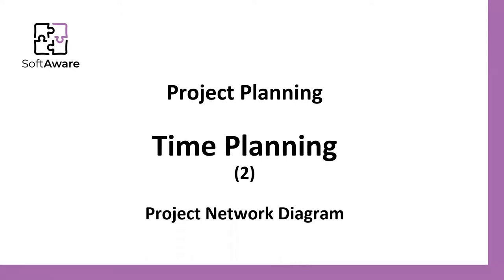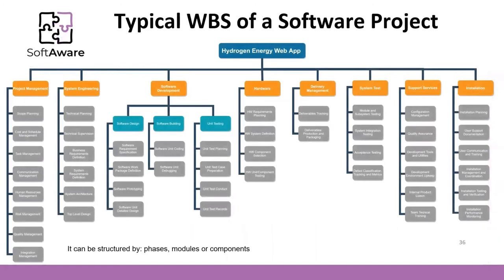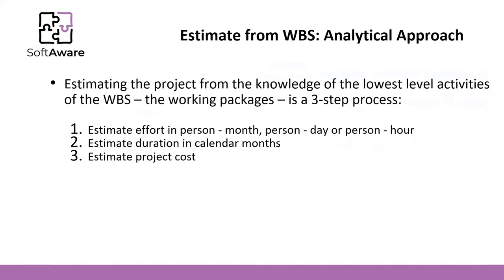Let's make a wrap-up of what we have learned in previous sessions. First, we talked about scope planning and the work breakdown structure — the way we decompose the work into fields, phases, modules, or components until we reach the work packages, which are the lowest-level tasks. With these work packages, it is possible to make an estimation of effort for each work package in person-month, person-day, or person-hour, and use that effort to obtain the duration in calendar months.